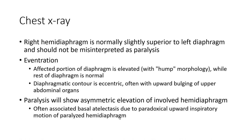For eventration, the affected portion of the diaphragm is elevated with herniation of abdominal contents, while the rest of the diaphragm is normal. The diaphragmatic contour is eccentric, often with upward displacement of upper abdominal organs. Paralysis shows symmetric elevation of the involved hemidiaphragm. Associated basal atelectasis is due to paradoxical upward inspiratory motion of the paralyzed hemidiaphragm.